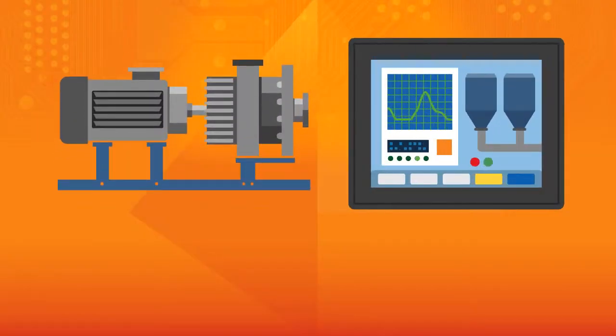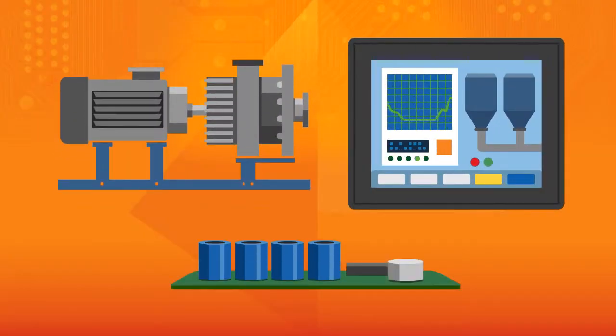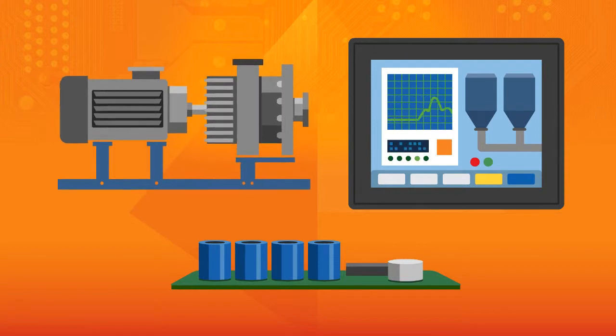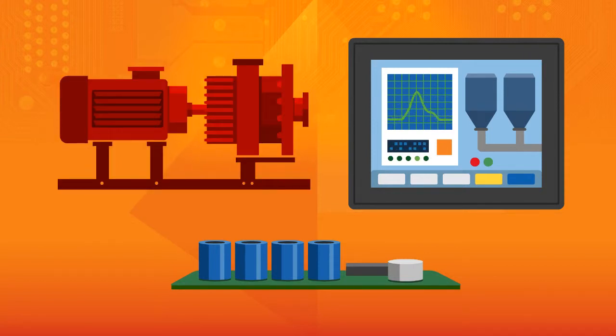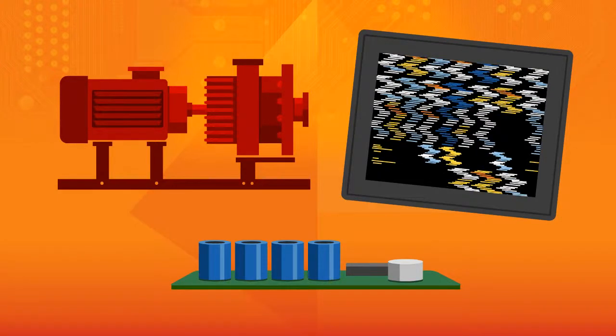Symptoms of power quality problems occur randomly, and always at the worst of times. You suffer through unplanned downtime caused by motors that mysteriously die, machine controllers that suddenly lose their programs or values, damaged drives, capacitors that short out, and more.